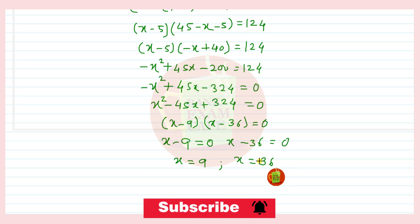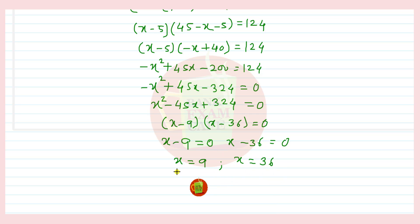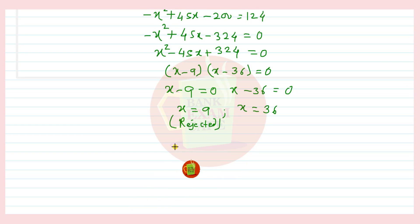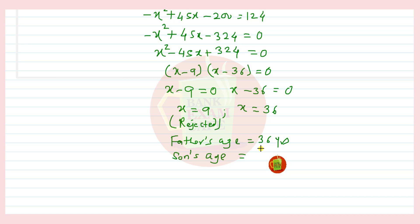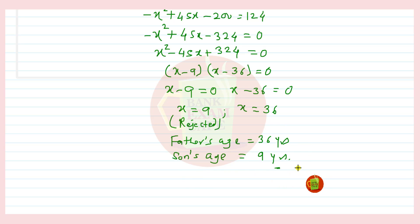Here x = 9 cannot be the father's age, so it is rejected. Therefore x = 36 is the father's age. The father's age is 36 years and the son's age is 9 years. Let us see the next question.